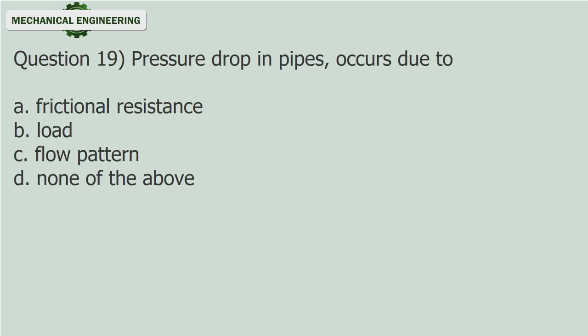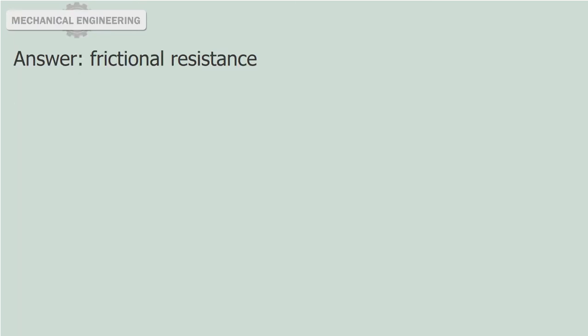Question 19: Pressure drop in pipes occurs due to: A. Frictional resistance. B. Load. C. Flow pattern. D. None of the above. Answer: Frictional resistance.